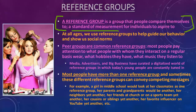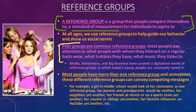Our reference groups might be our peers, and oftentimes they are, especially when we're younger. When you start going to school you start noticing what other people are wearing, how they're doing their hair, how often they're working out, what their body looks like compared to yours. We start to reference other groups around us and compare ourselves to those groups to assess how we feel in reference to them.